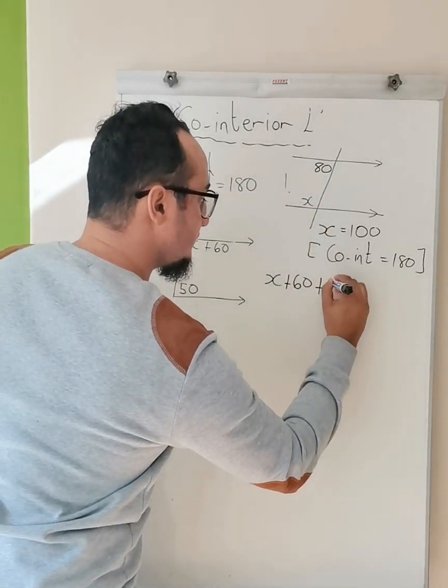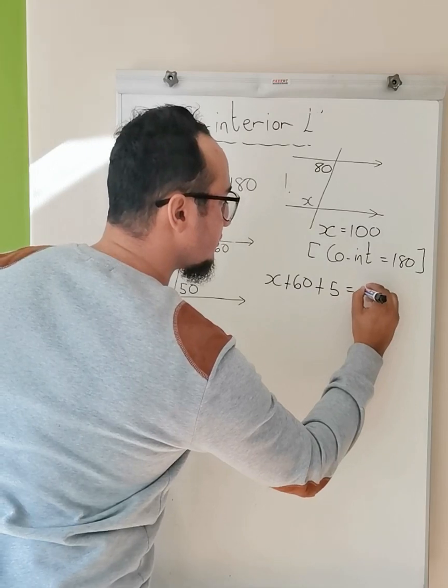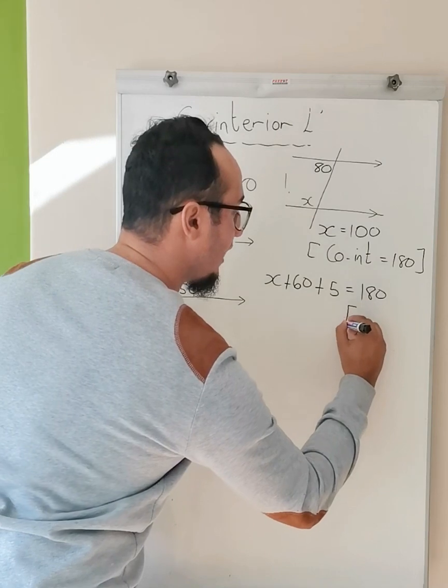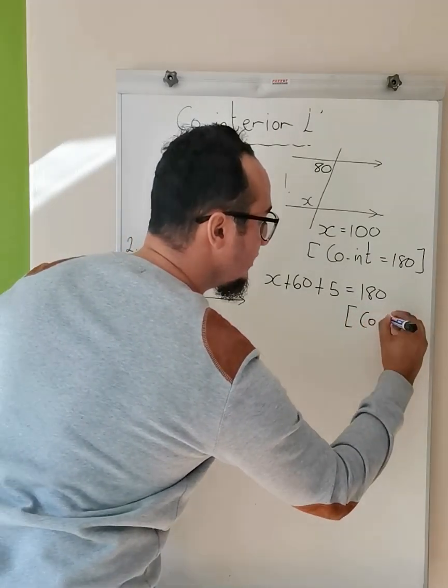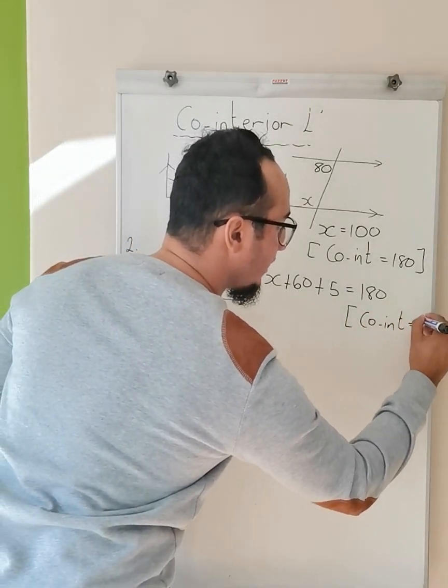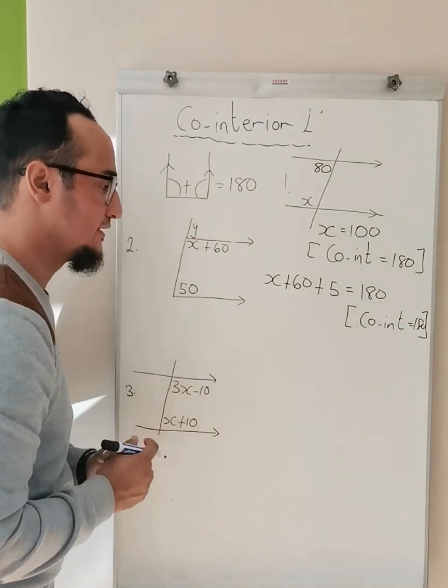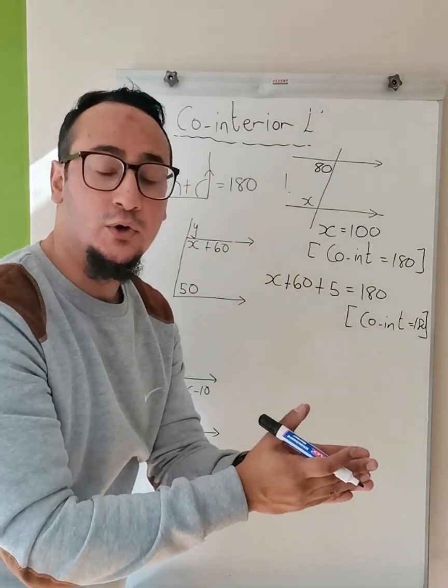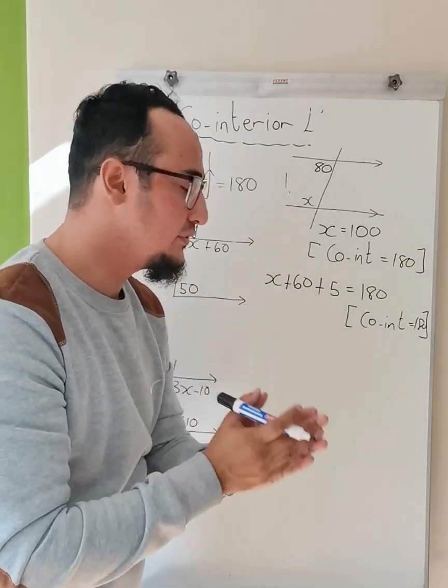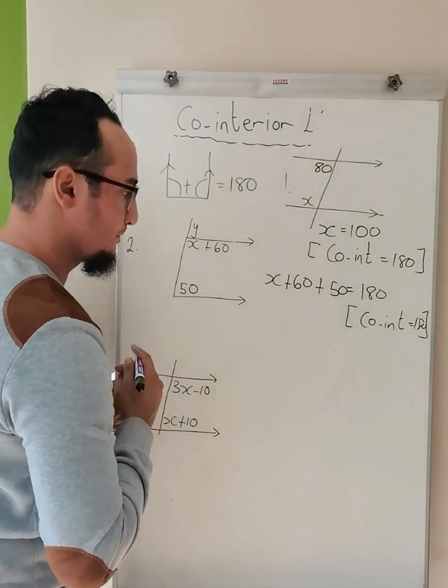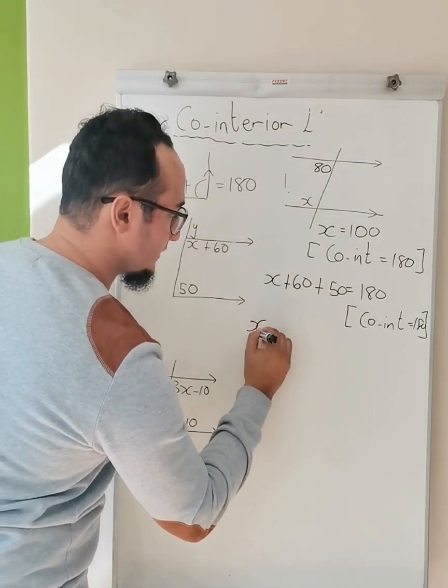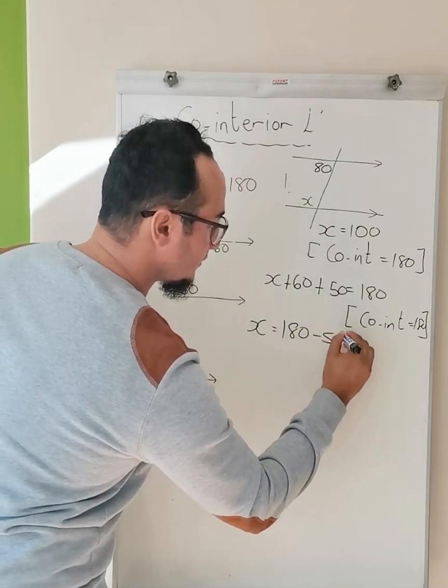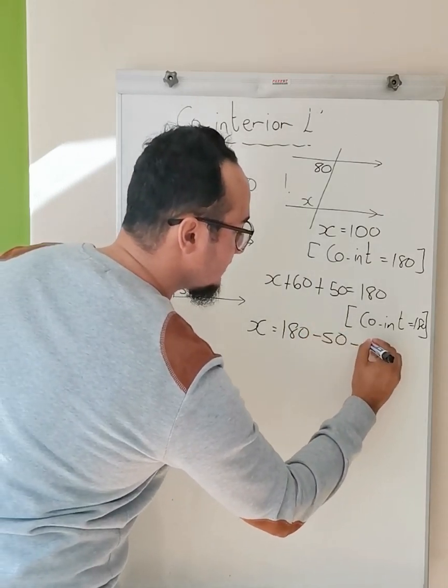...which is 50, must be equal to 180 degrees. So the reason would stay the same. How do I know that? Because co-interior angles equal to 180 degrees. And now what do I see? I see an algebraic equation, which means what is the unknown? It's x. So therefore, x is equal to 180 minus 50 minus 60.